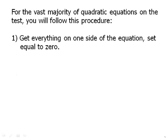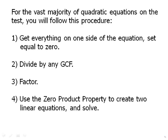For the vast majority of quadratics on the test, you will follow this procedure. First of all, you will get everything on one side of the equation set equal to zero. Then you will divide off any greatest common factor. You will factor it into a product of linear binomials and then use the zero product property to create two linear equations and solve each one of them separately. So this is the procedure.